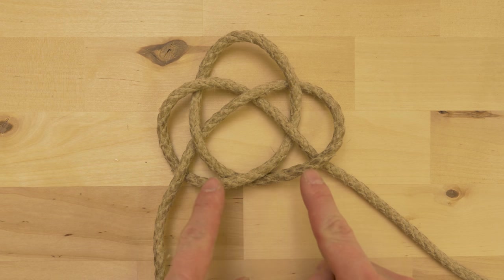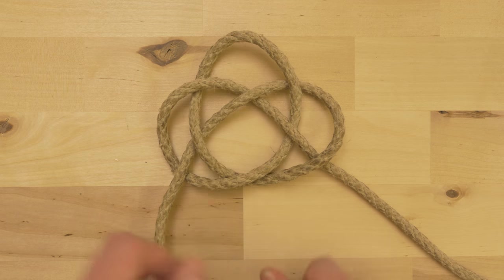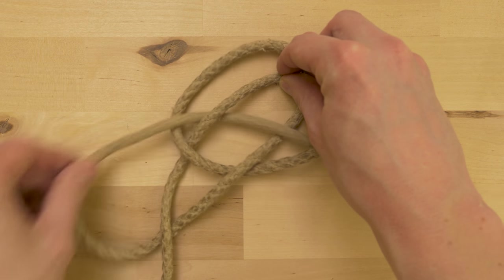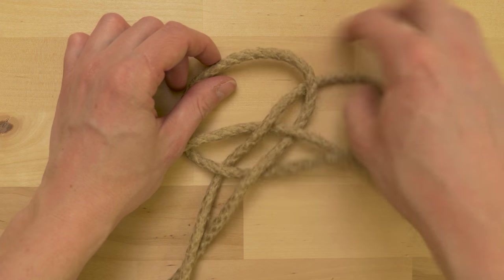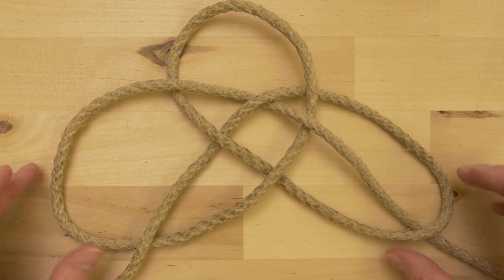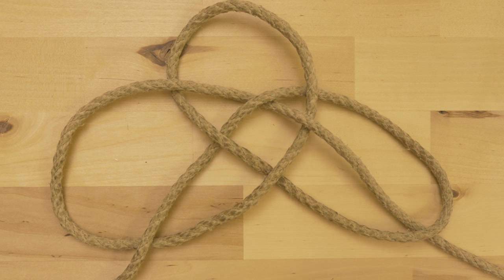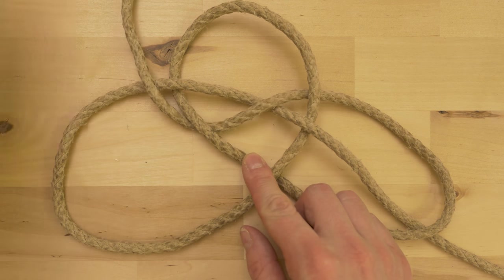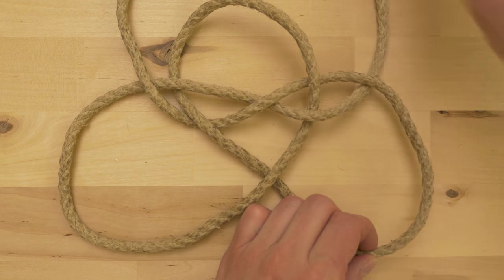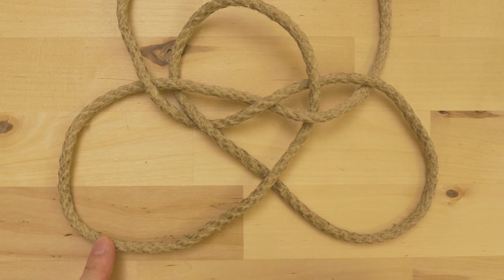And we're going to enlarge these two bottom parts. So simply pull in your working ends in order to enlarge them. Like this. Now place your working ends out of the way. Twist these two bottom parts towards the right side.